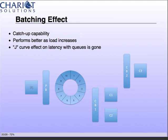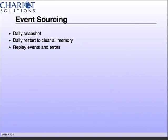The batching effect — that catch-up capability — actually performs better as load increases. If you have queues, you'll see that the performance and latency graph is a J shape. Whereas with the ring buffer, it's actually going down.